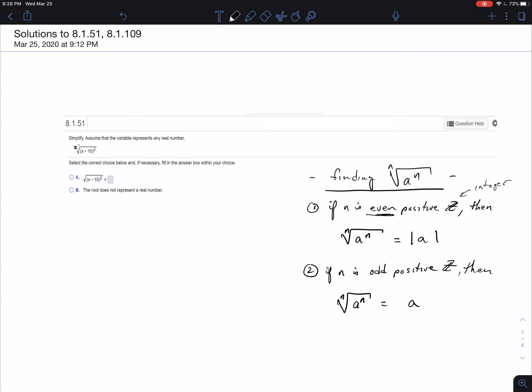then the radical a to the n is the absolute value of a. And the second one is if n is odd positive integer, then n root a radical a to the n is equal to a.